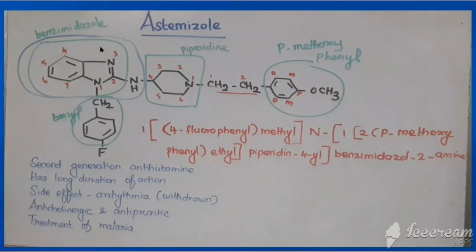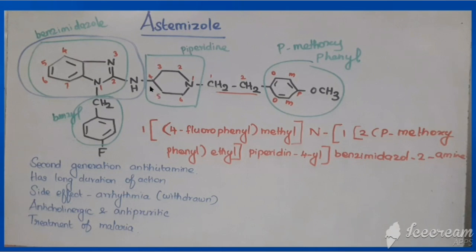The chemical name: the parent is benzimidazole-2-amine. At position 1, it has 4-fluorobenzyl (or 4-fluorophenyl-methyl). At position N, it is: N-[2-(4-methoxyphenyl)ethyl]-piperidine-4-yl — giving the full name: 1-(4-fluorobenzyl)-N-[2-(4-methoxyphenyl)ethyl]-piperidin-4-yl-benzimidazol-2-amine.